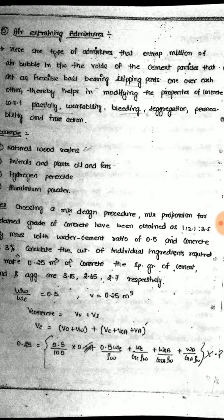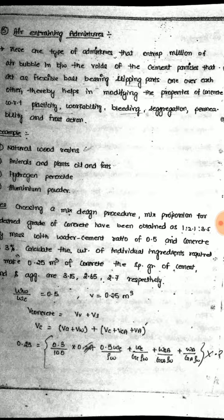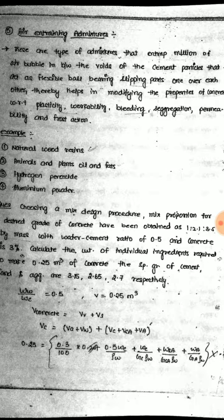Air entraining admixtures are the type of admixtures that entrap millions of air bubbles in the voids between cement particles, acting as flexible ball bearings allowing parts to slip over each other. This helps in modifying the properties of concrete with respect to plasticity, workability, bleeding, segregation, permeability, and frost resistance. Examples include natural wood resin, animal and plant oils and fats, hydrogen peroxide, and aluminum powder.